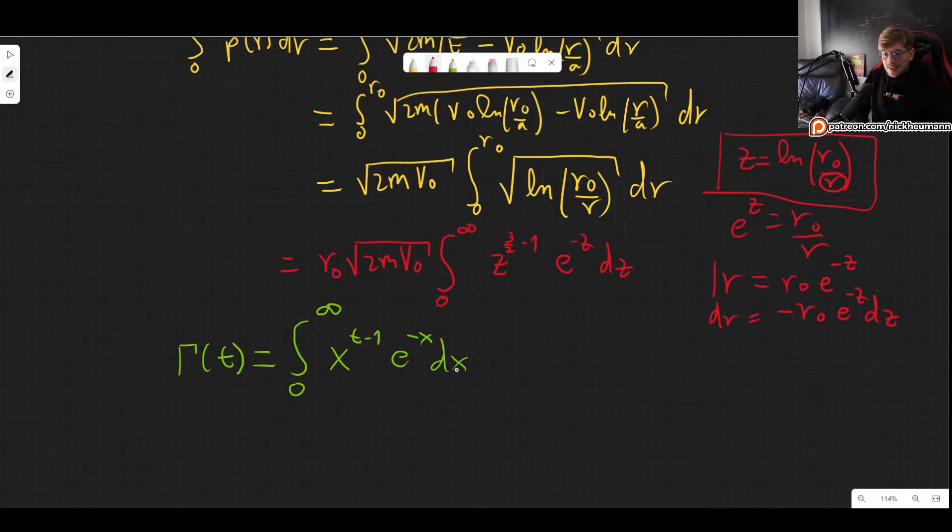And now they are identical which means that this expression right there is simply, this is all of our constants that doesn't change, and then we have gamma of three halves.